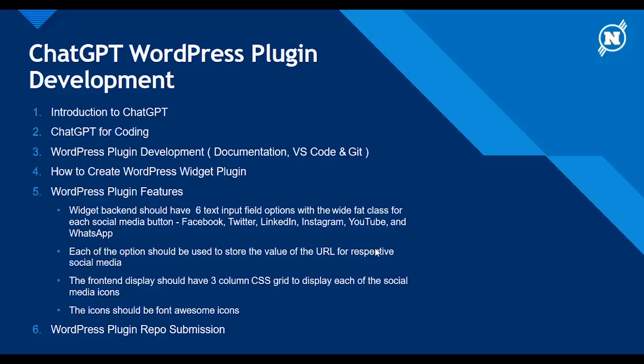We'll be using VS Code and Git to manage our project. We'll begin by creating the WordPress plugin using ChatGPT-generated code from the instructions we write. The main features for this WordPress plugin will include a backend widget interface with about six text inputs. These input fields will include specific social media input fields where users can put the URL to be saved and displayed as an icon on the front end. I'm going to create a basic widget plugin to illustrate the use of ChatGPT and how you can adapt it in a WordPress development workflow.